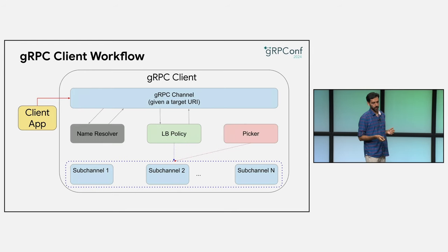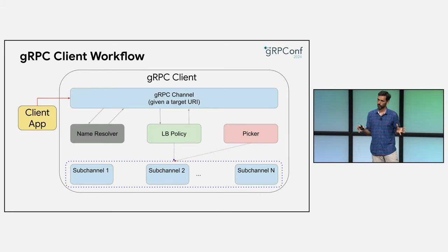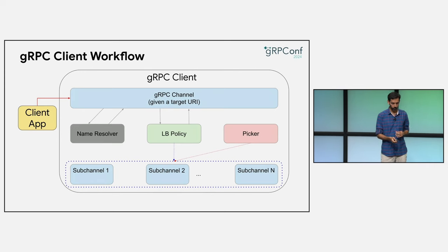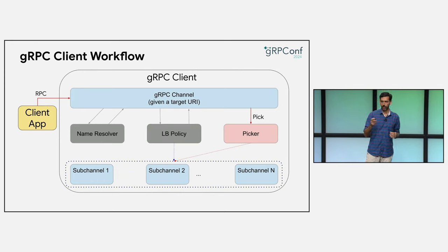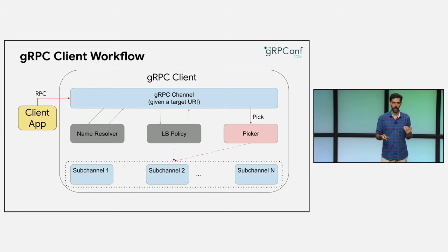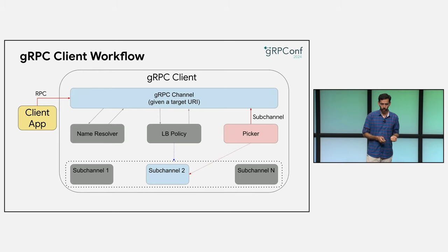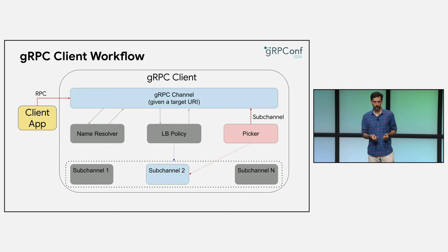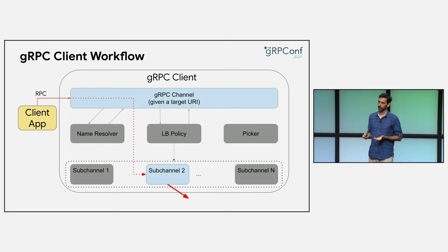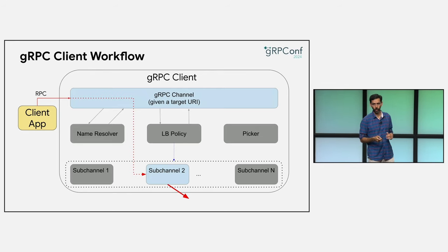At some point, the LB policy returns an aggregated connectivity state to the channel along with a picker. The picker is the call management component — it's invoked for every RPC to select a subchannel from the available subchannels. When an RPC is made, the gRPC channel calls the picker, the picker looks at the ready subchannels and picks one based on whatever algorithm it uses, and then the RPC makes its way out through that subchannel.